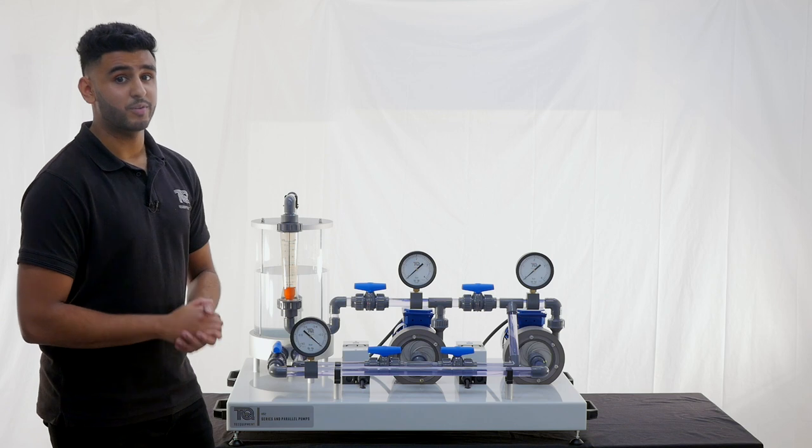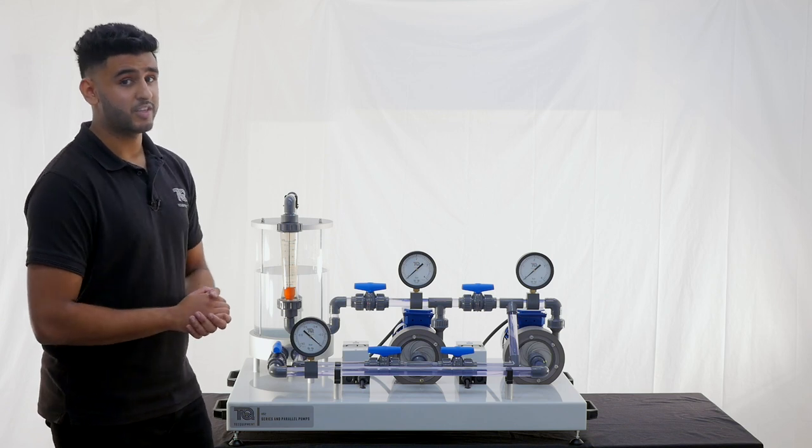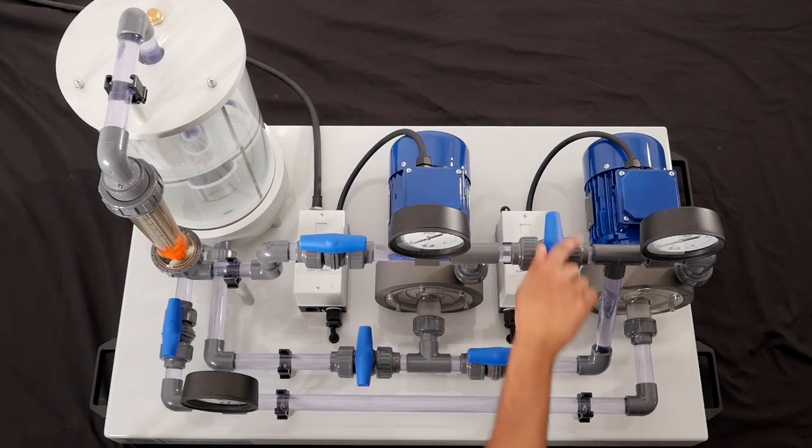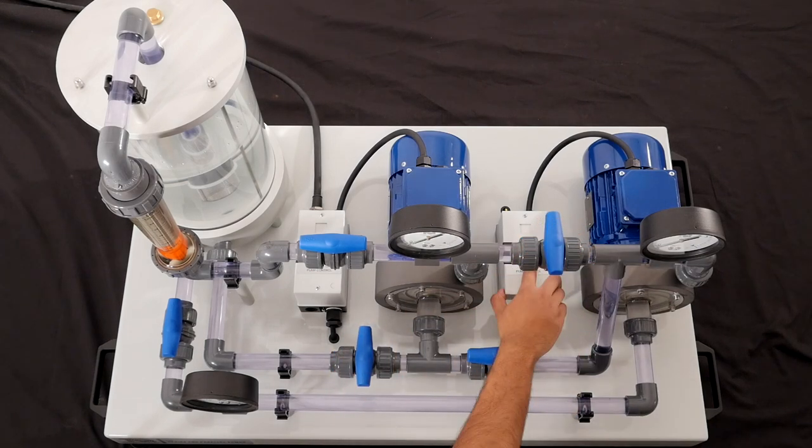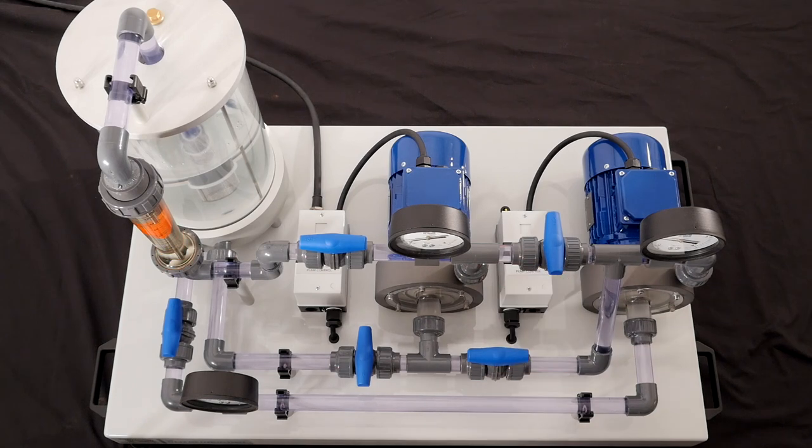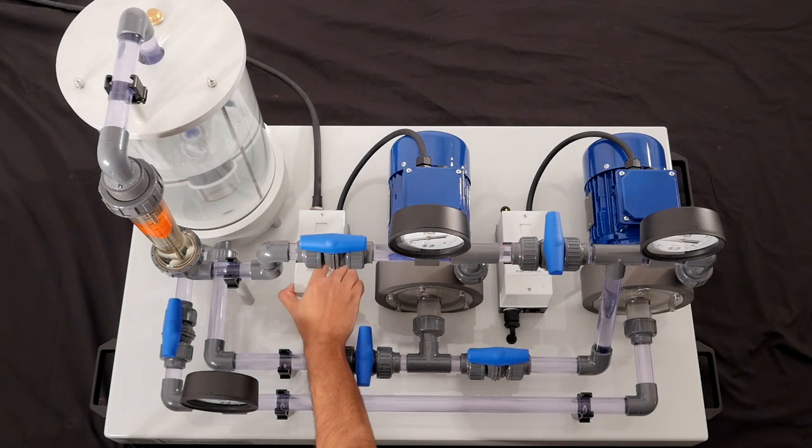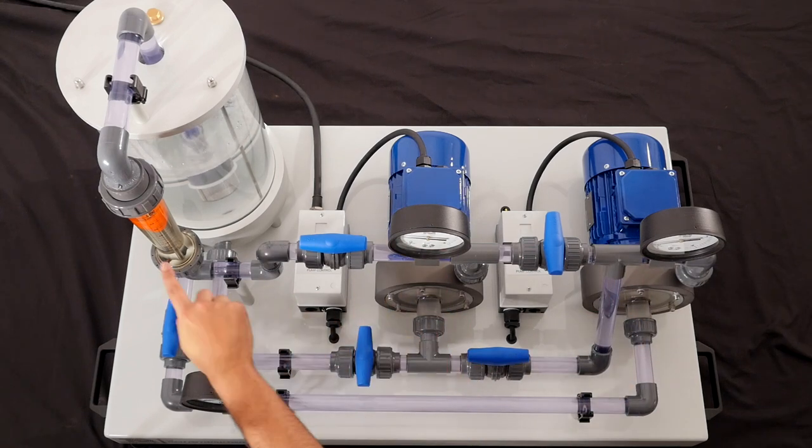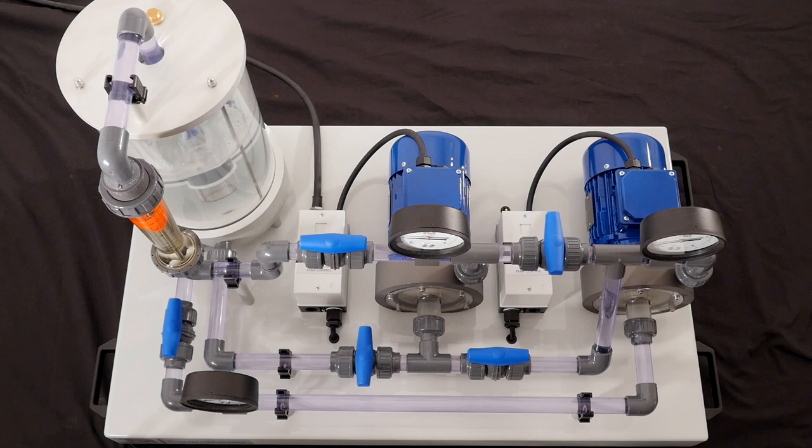As I mentioned before, the adjustable valves allow a wide range of pump configurations. To run the unit in series, you first close these two valves, turn on pump 2, and then pump 1. Water will be drawn from the reservoir through to pump 2, using pump 2's outlet as pump 1's inlet, and then back to the reservoir. For two identical pumps in series, the head will be twice the head of a single pump at the same flow rate.